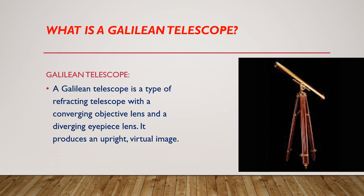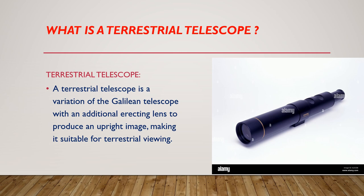What is a terrestrial telescope? A terrestrial telescope is a variation of the Galilean telescope with an additional erecting lens to produce an upright image, making it suitable for terrestrial viewing.